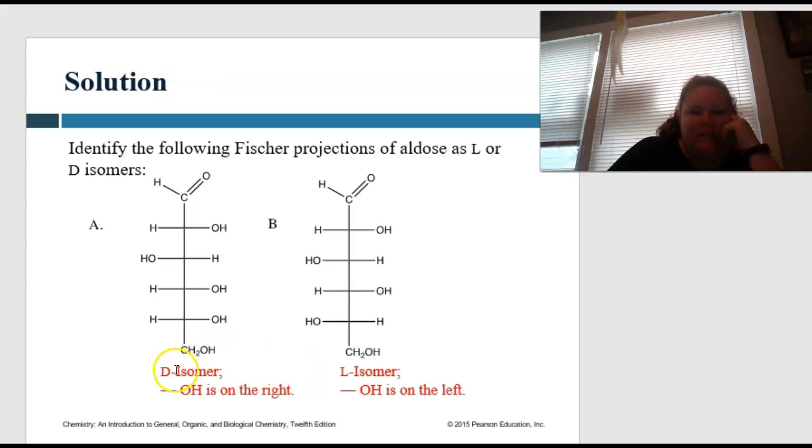All right. So remember D has the hydroxyl group on the right, where the L isomer is the left, L left. So when we have the OH here on the left, that means it's going to be the L isomer, where the OH on the right is the D isomer. Great job.